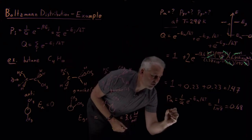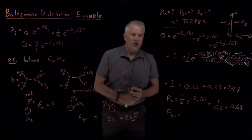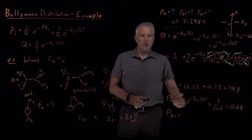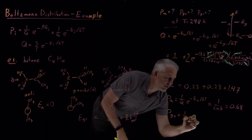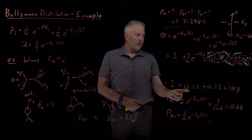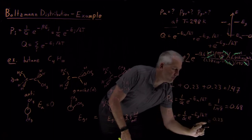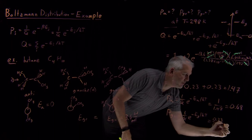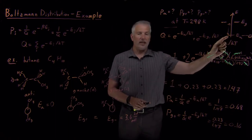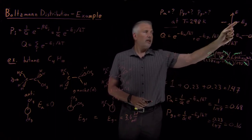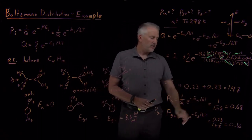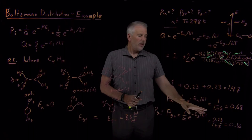If we want the probability that the molecule is in the Gauche plus conformation, it's (1/Q) × e to the minus E_Gauche+ / kT. We already calculated that Boltzmann factor as 0.23, so it's 0.23 / 1.47, which works out to 16%. An equal 16% of molecules are Gauche minus, and these three probabilities add up to 100%.